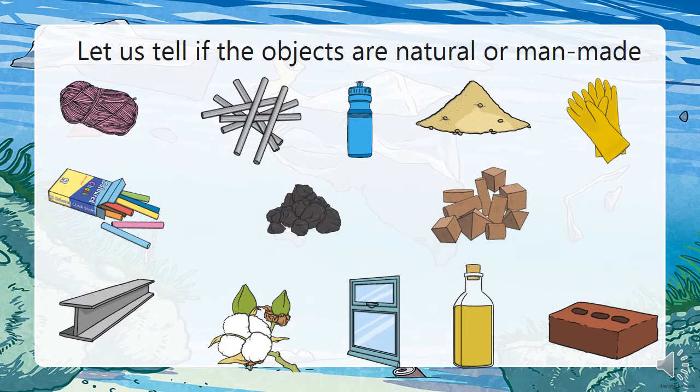Now let us look at some objects and tell if they are natural or man-made. Pause the video and let's see. We have yarn, chalk, an iron, a water bottle, the earth, a glove, coal, wood, cotton, a window made from glass, oil, and a brick. Which are natural? Which are man-made?